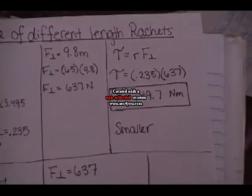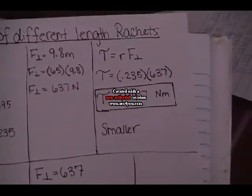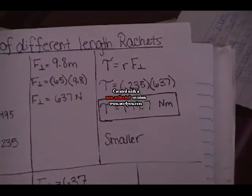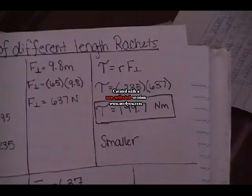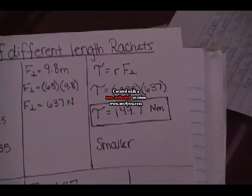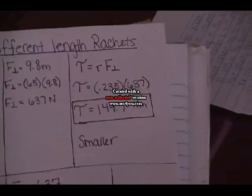We then apply it to the torque formula, radius times force perpendicular. So it would be torque equals 0.235 times 637 and you get a torque of 149.7 newton meters.